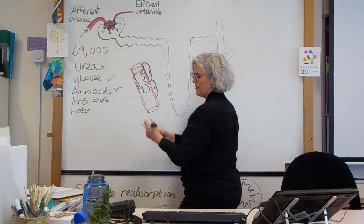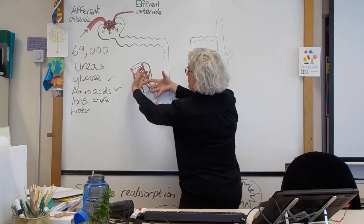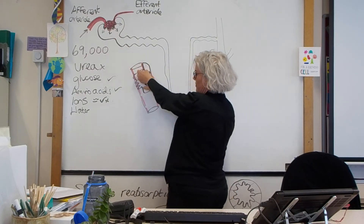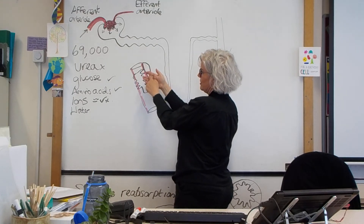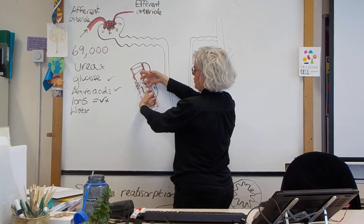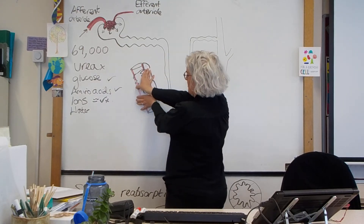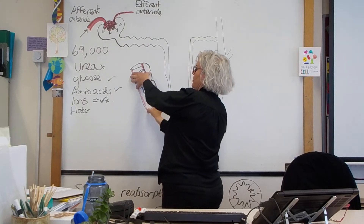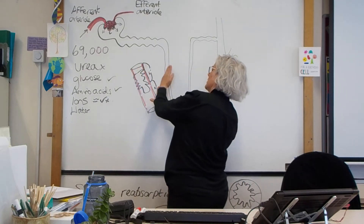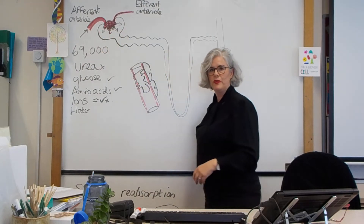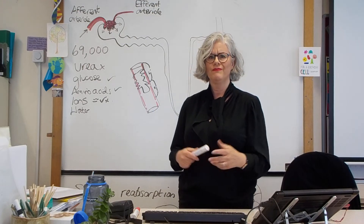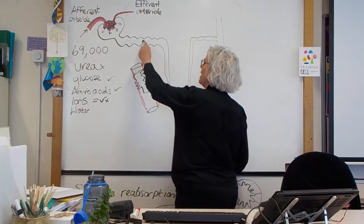The podocytes wrap around the capillaries — think about wrapping your hands around a tube. Your hands represent part of the Bowman's capsule wrapping around the blood vessel. Anything pushed through your fingers ends up in the Bowman's space. That is ultrafiltration: filtering out pretty much everything in an ultra, high-volume way.